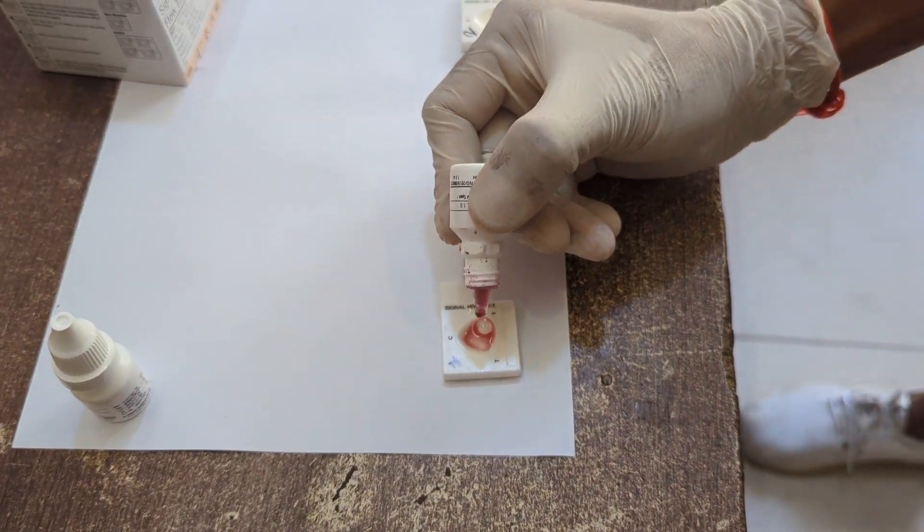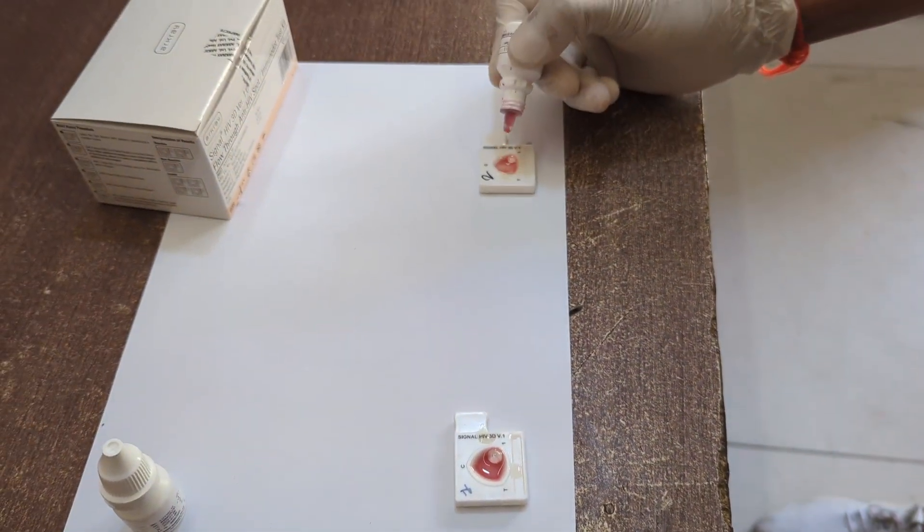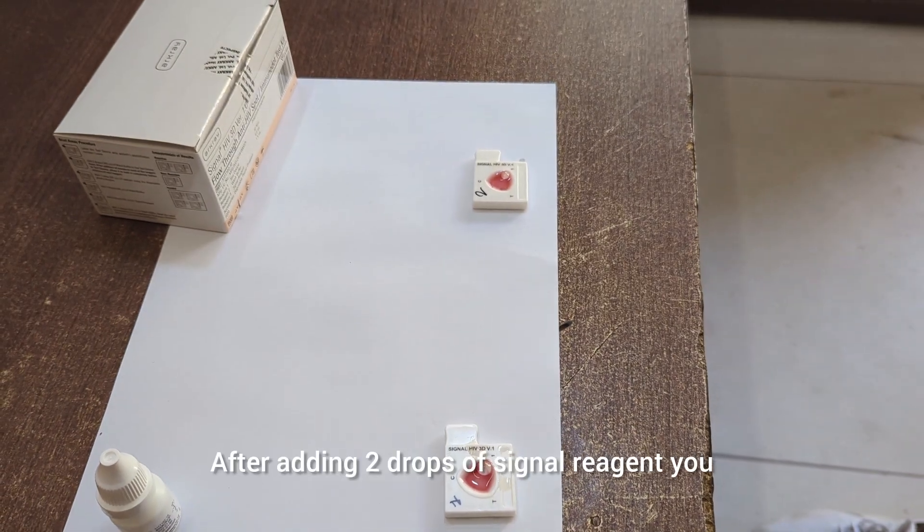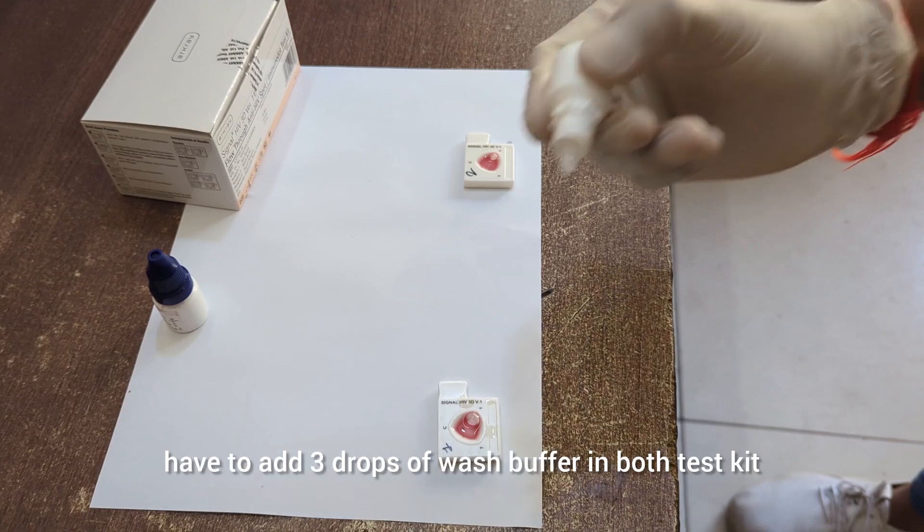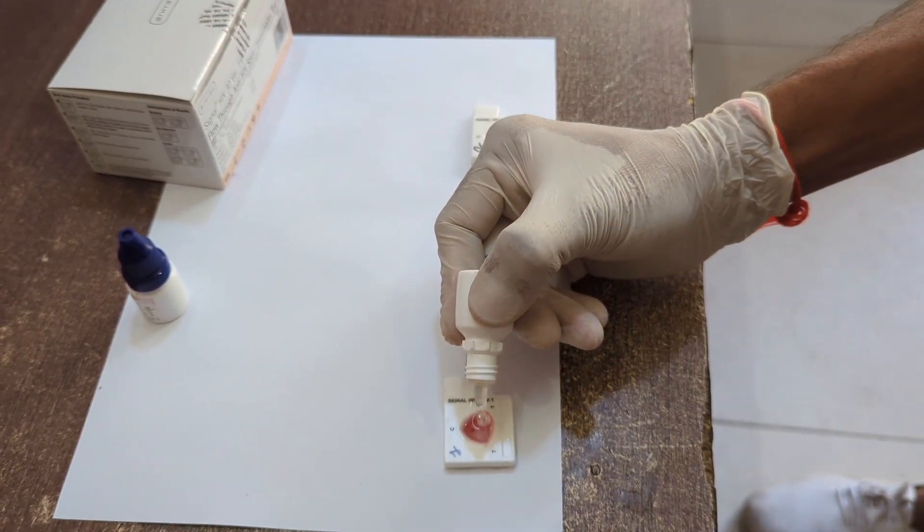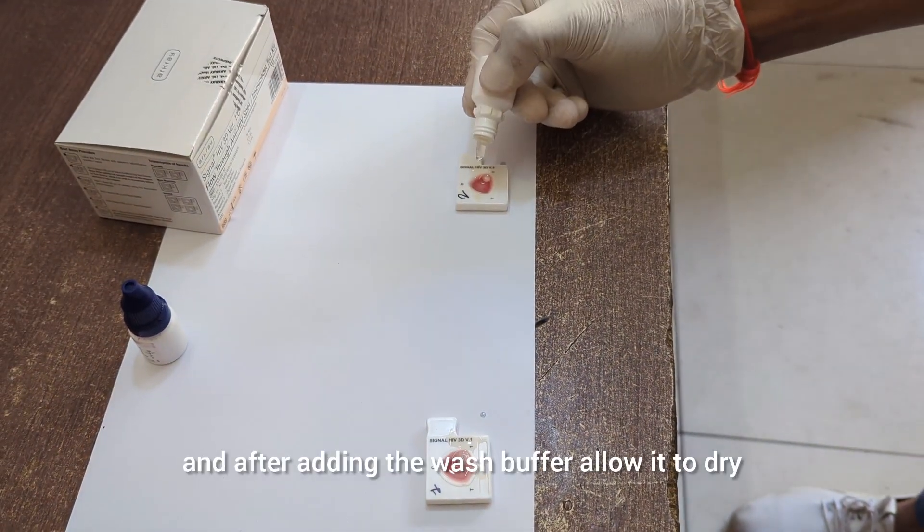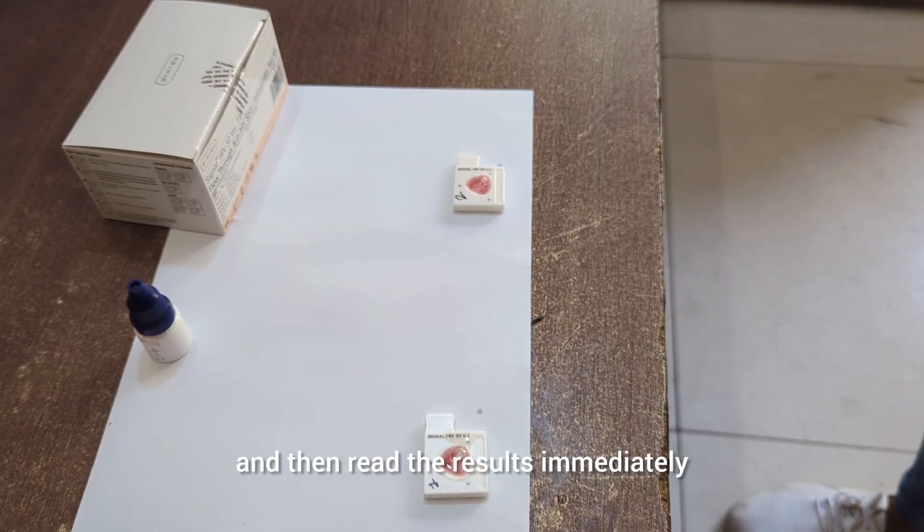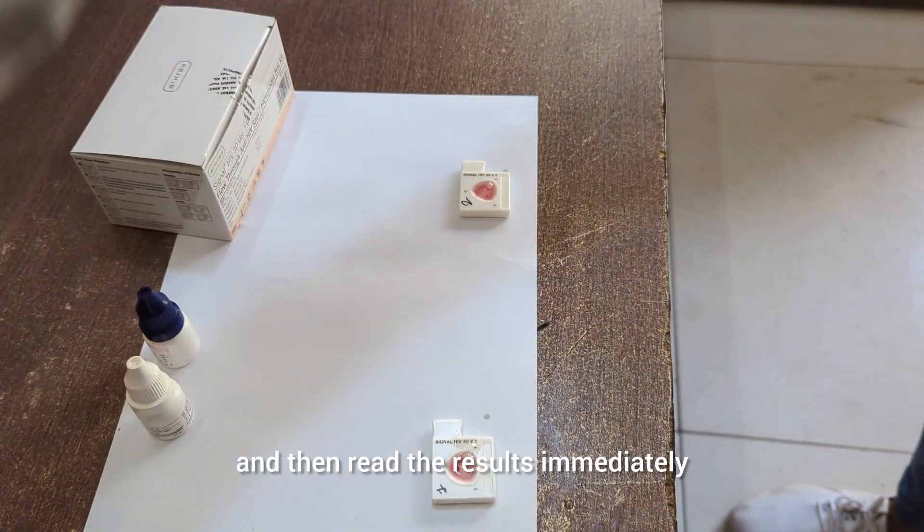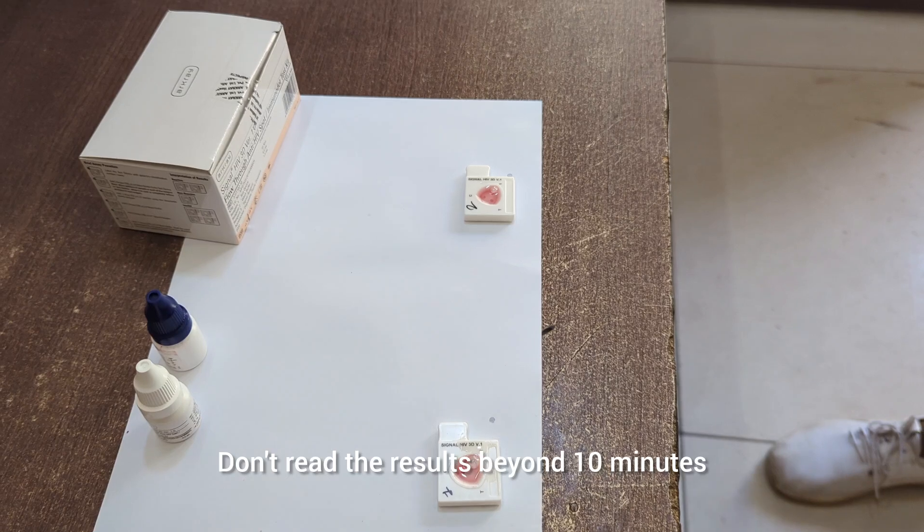After adding the wash buffer, you have to add two drops of signal reagent in both test kits, test kit number one and test kit number two. After adding two drops of signal reagent, you have to add three drops of wash buffer in both test kits.